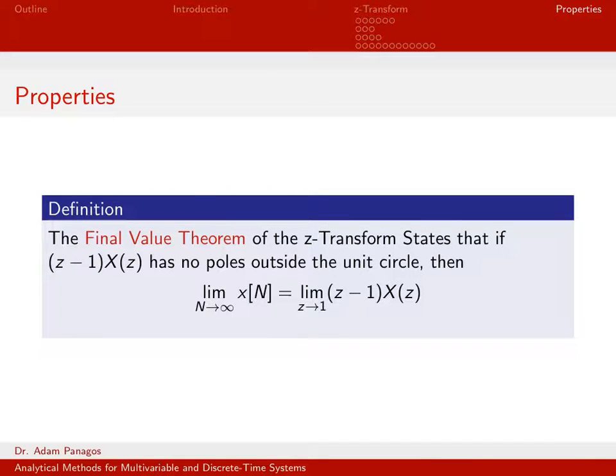There's a similar proof for the final value theorem. So the final value theorem says I can compute kind of the asymptotic value of my discrete time signal, the limit as n goes to infinity of x of n, by performing this limit operation right here. So take my z-transform x of z, multiply it by z minus 1, and take the limit of this product as z goes to 1. If you want to write this out, you can do a similar proof and actually kind of get something out. We're not going to do it, but it's akin to what we showed on the previous slide.